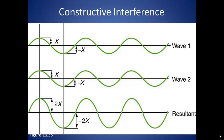Notice also that the troughs line up and the resultant wave has a trough with an amplitude equal to the sum of the trough amplitude of wave 1 and the trough amplitude of wave 2. So constructive interference results in a larger amplitude, and this shows up in both the crests and the troughs of the resultant wave.